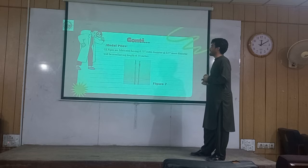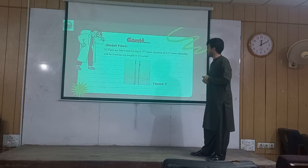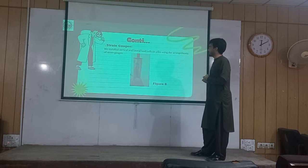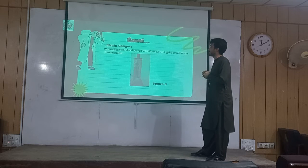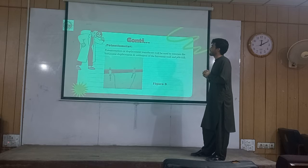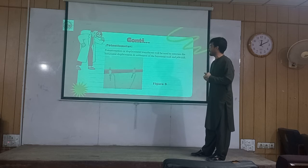Model piles: galvanized iron piles with an outer diameter of 0.65 inches and a length of 18 inches. The outer diameter is 0.5 inches. We have strain gauges to measure vertical and lateral forces on the pile. These strain gauges are connected to the grid along the tube. The transducer measures displacement — it measures horizontal displacement, settlement of the soil, and pile raft behavior.